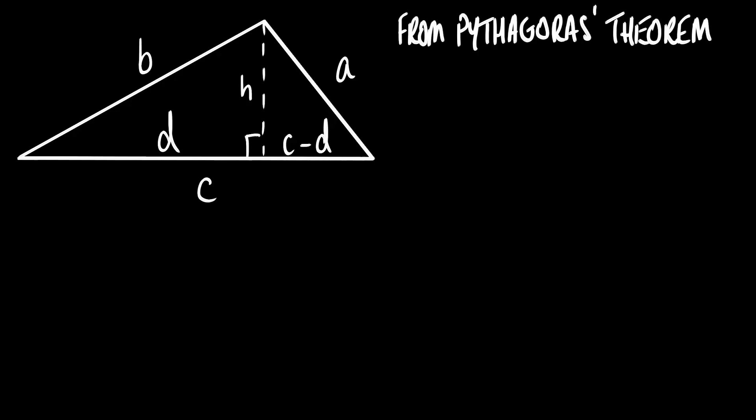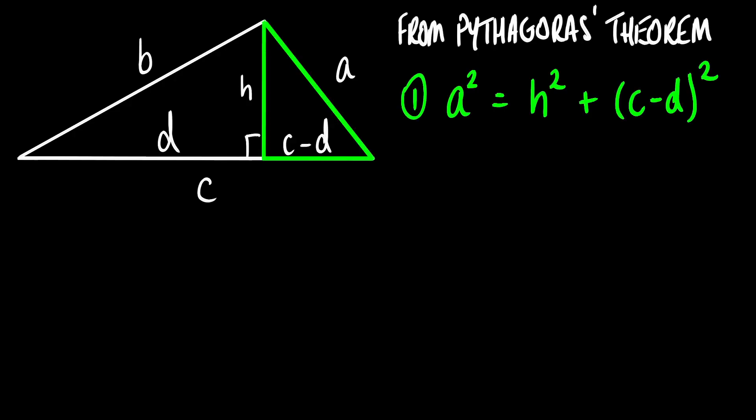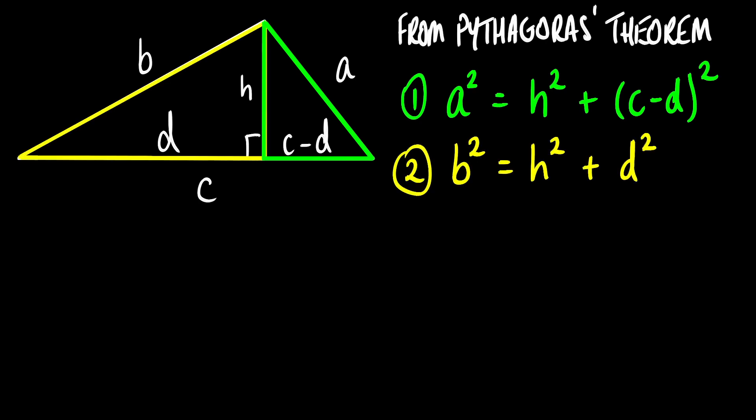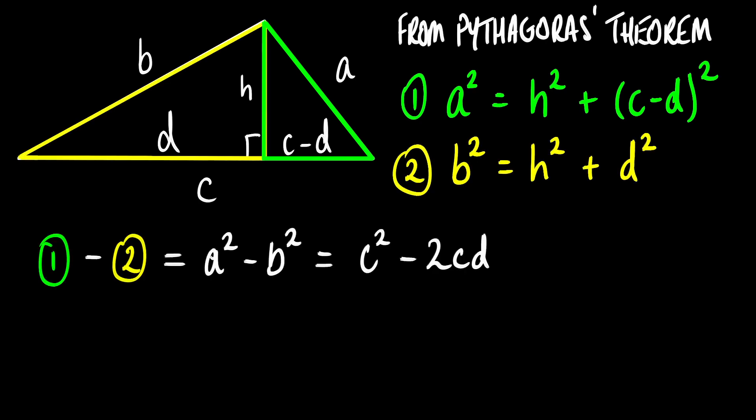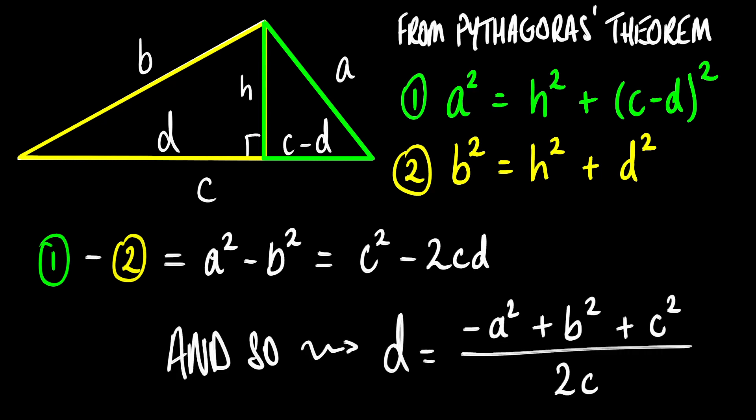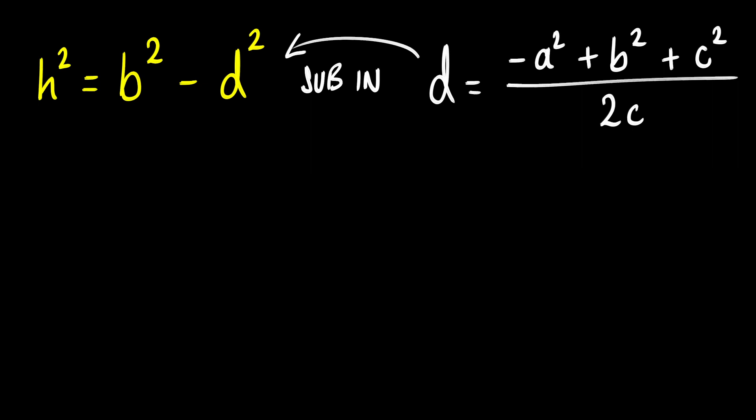This is where Pythagoras comes in. Using Pythagoras's theorem we get two equations, and we can eliminate the variable H by taking them away from one another to get a new equation, which when made to make D the subject looks like this. We can now substitute this back into H squared equals b squared minus D squared, and after that it's just manipulating algebra — the difference of squares rule pops up a couple of times.